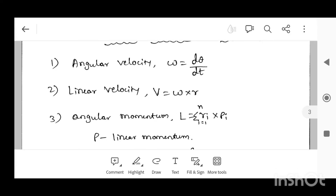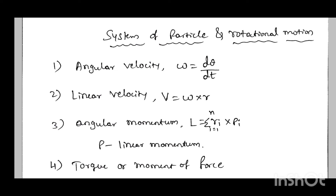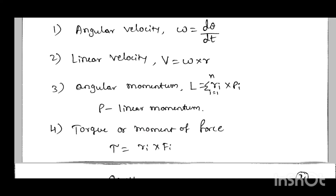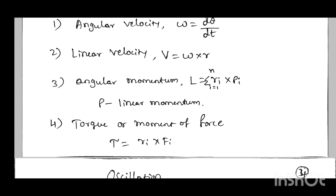Angular momentum L equal to summation from i equal to 1 to n of r_i cross p_i, where the system has particles from 1 to n, r_i is the radius vector, and p_i is the linear momentum. Next is torque or moment of force, symbol tau: tau equal to r_i cross F_i, where r_i is the radius vector and F_i is the force vector. These are the main formulas in this chapter.